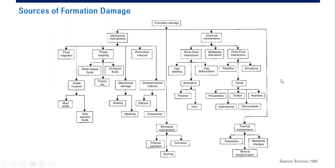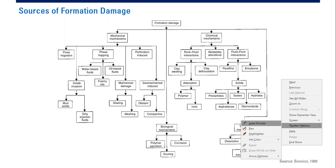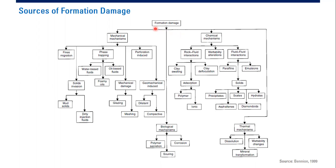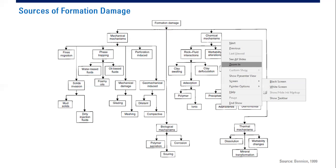We have a diagram here — let me switch to laser pointer. You can see we have a tree of the sources of formation damage. We will talk about it from the beginning, listing down all the possible sources of formation damage. In future videos, hopefully we can cover as many sources as possible. Starting from formation damage, we have mechanical mechanisms and also chemical mechanisms.